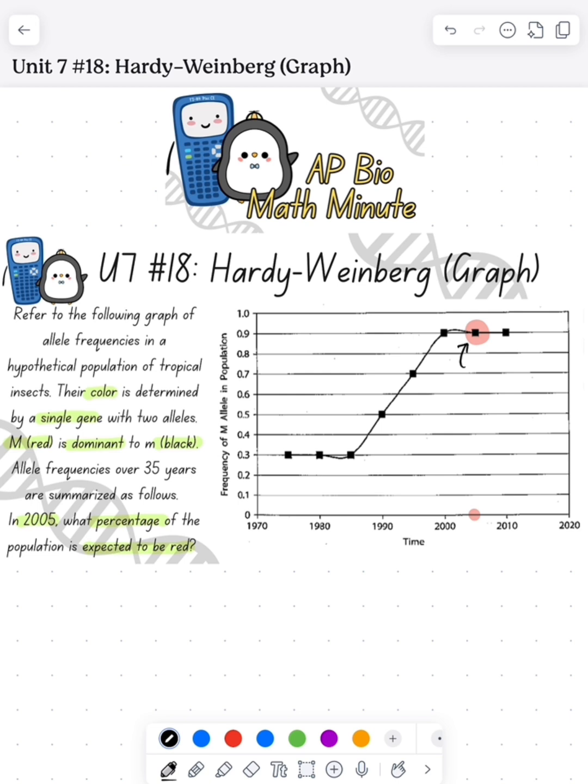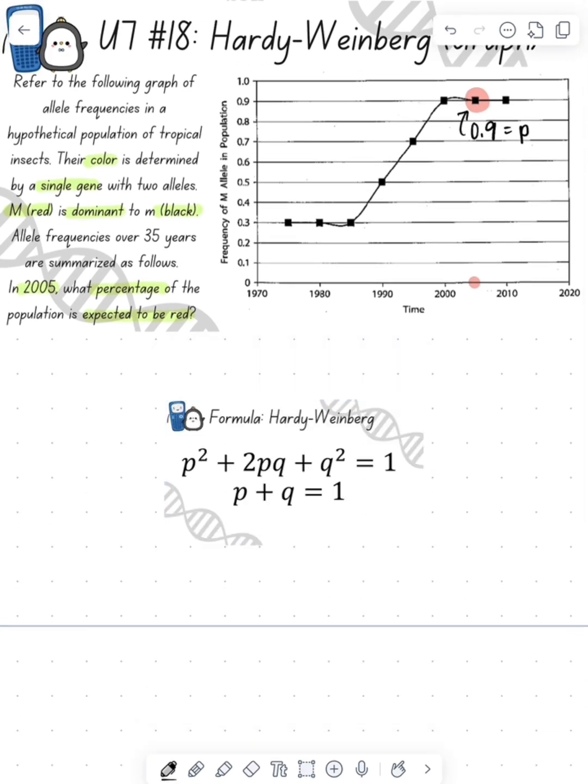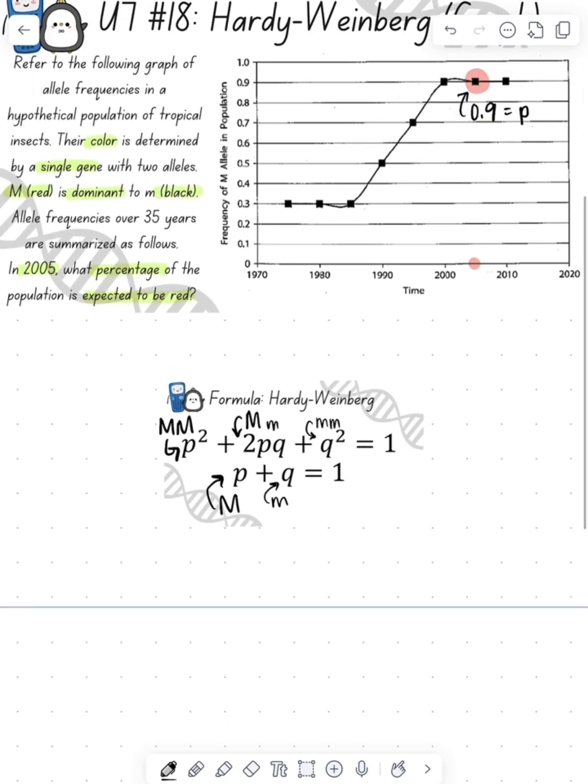In 2005, I see that the data point is at P equals 0.9, so I know my P value is 0.9. As a reminder, here's our equation. P squared is the frequency of our homozygous dominant. 2pq is our frequency of our heterozygous. Q squared is the frequency of our homozygous recessive. P is the frequency of our dominant allele, and Q is the frequency of our recessive allele.